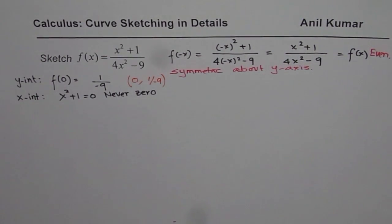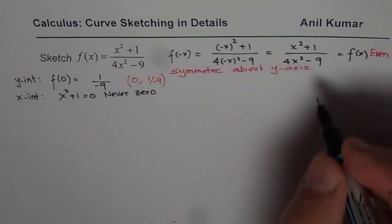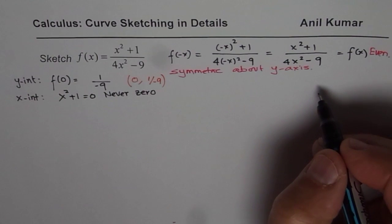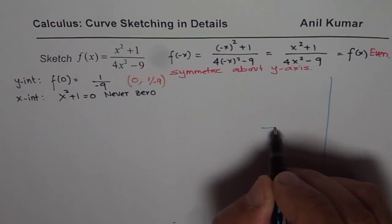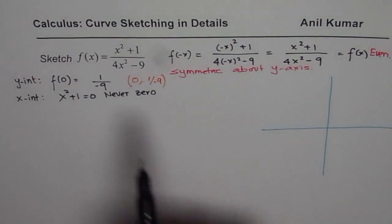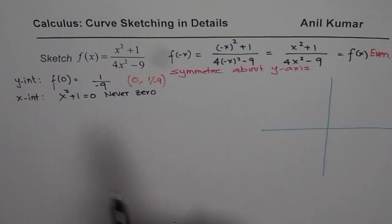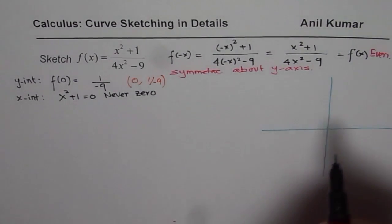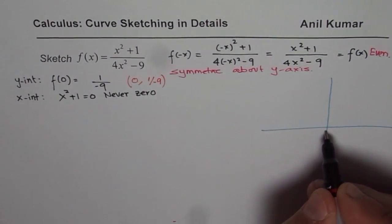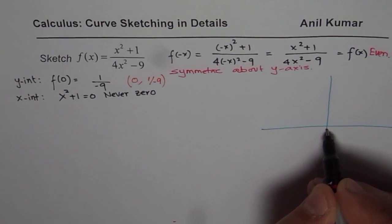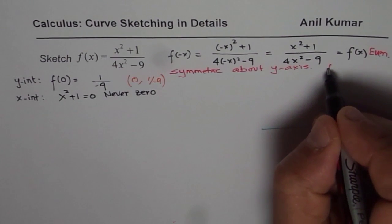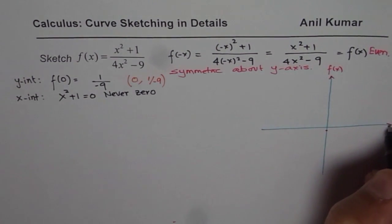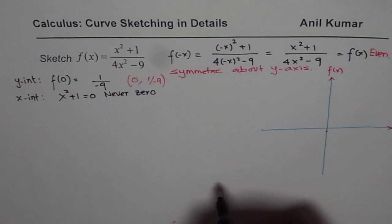These are important pieces of information which will help us sketch an accurate graph. Let us put these values on the graph. We have found that we have a y intercept which is negative — let's say this is approximately -1/9. The function is even, so it is symmetric about the y-axis.